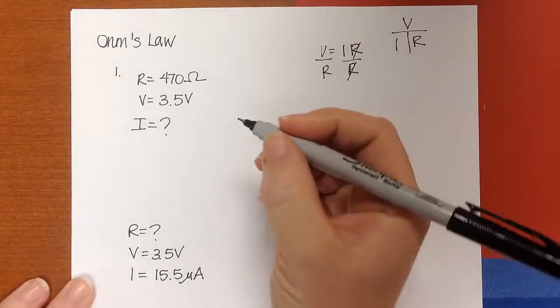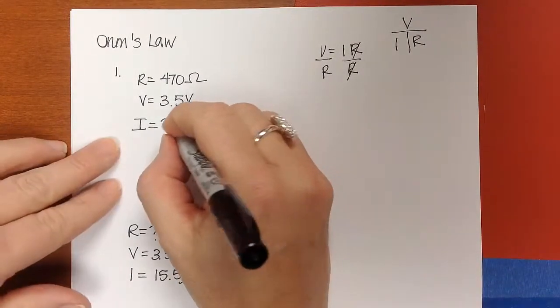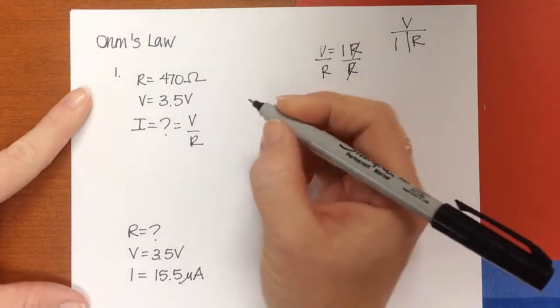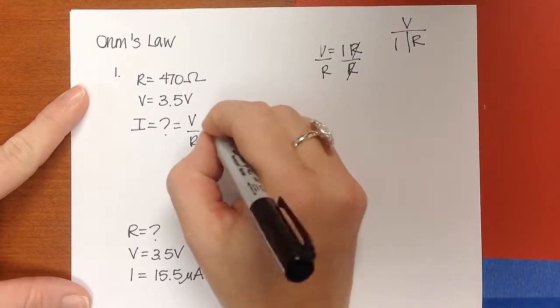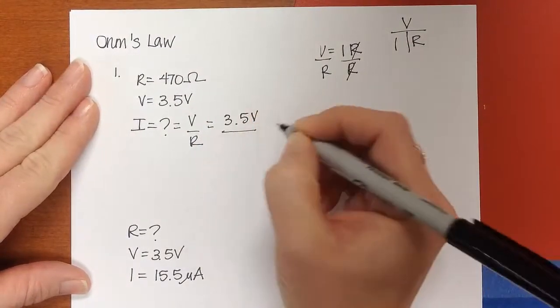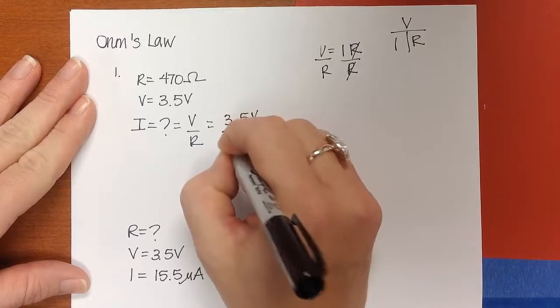To solve this problem we're going to use I is equal to V over R. Both our V and our R are already in the fundamental units, so that is 3.5 volts divided by 470 Ohms.